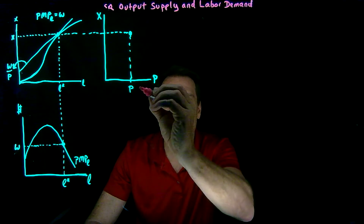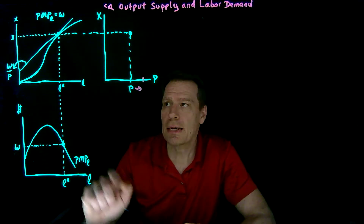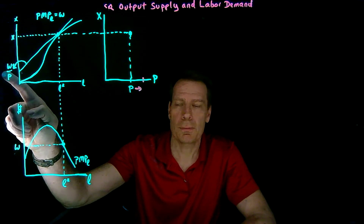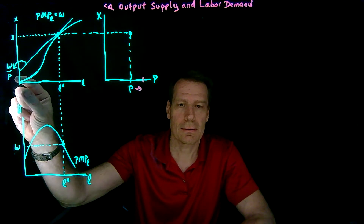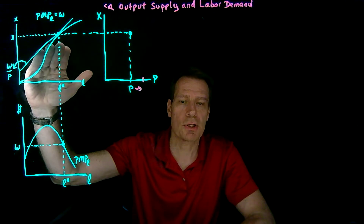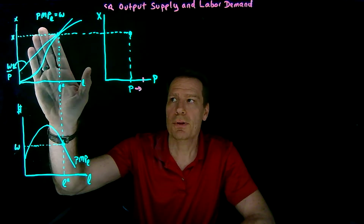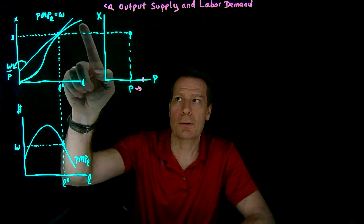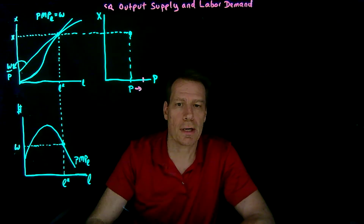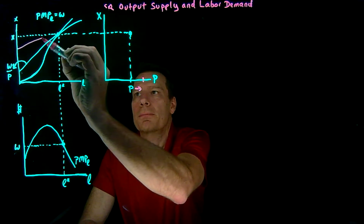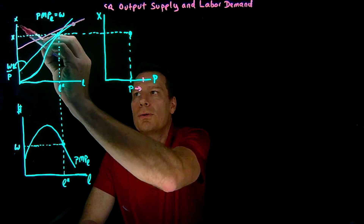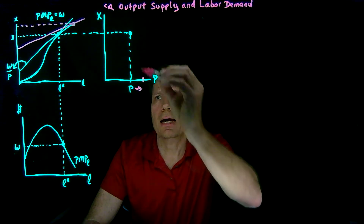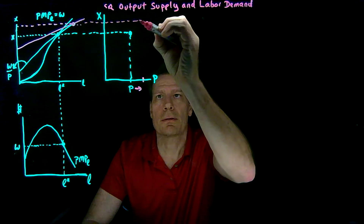What happens if price increases? If price increases, then price in this denominator is going up, which means the fraction is decreasing. The slope of the profit lines is becoming shallower. If the slopes of the profit lines are becoming shallower, that means the tangency is going to have to lie on a shallower portion of the short-run production function, somewhere up here. And we reach a new profit-maximizing level of output. So at this higher price, we'll end up producing more.